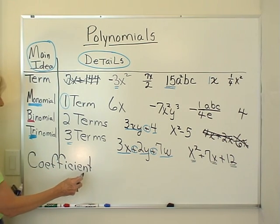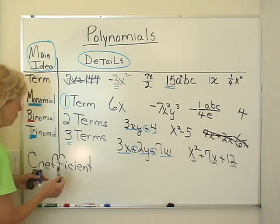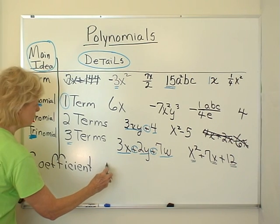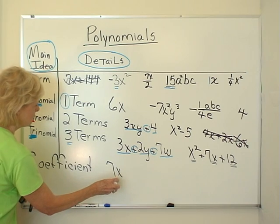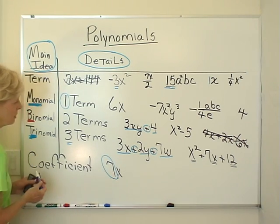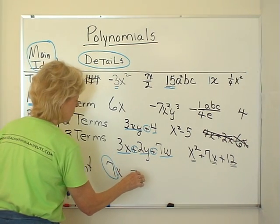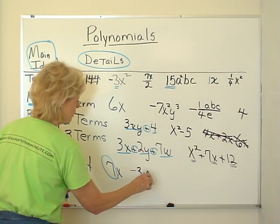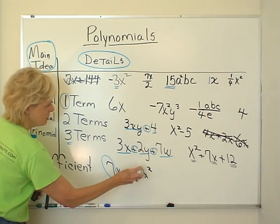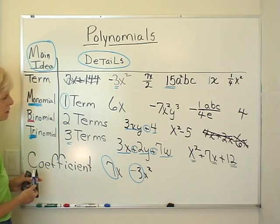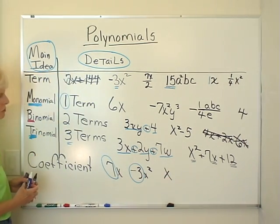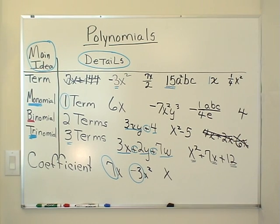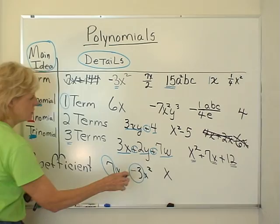So a coefficient is the number in front. So if I have 7x, then the coefficient is 7. If I have negative 3x squared, then the coefficient is negative 3. If I just have x all by itself and I don't see anything in front, then what do you think the coefficient is? Right. The coefficient is 1.